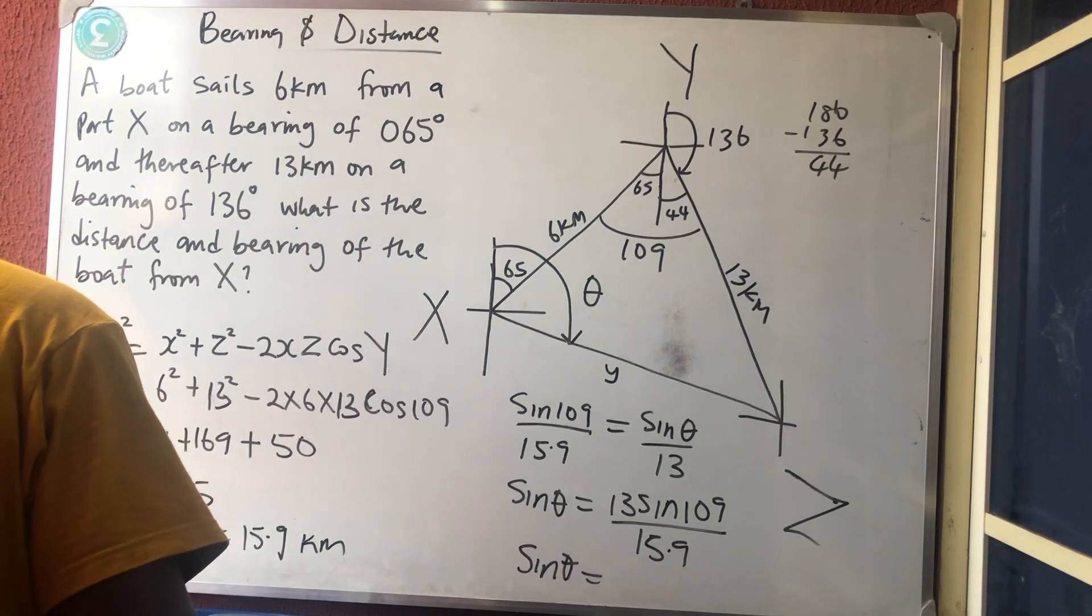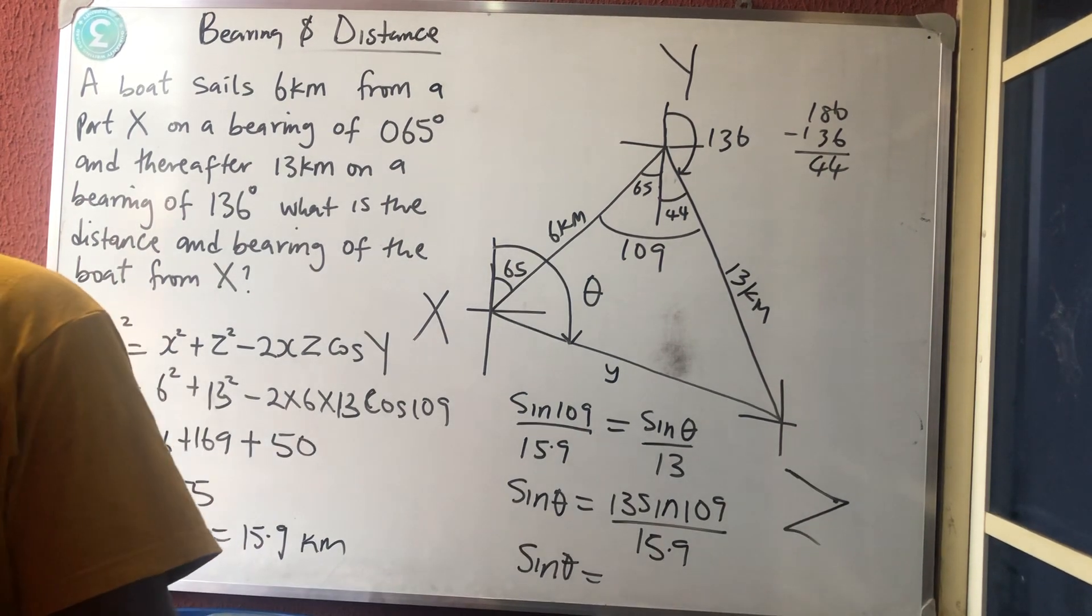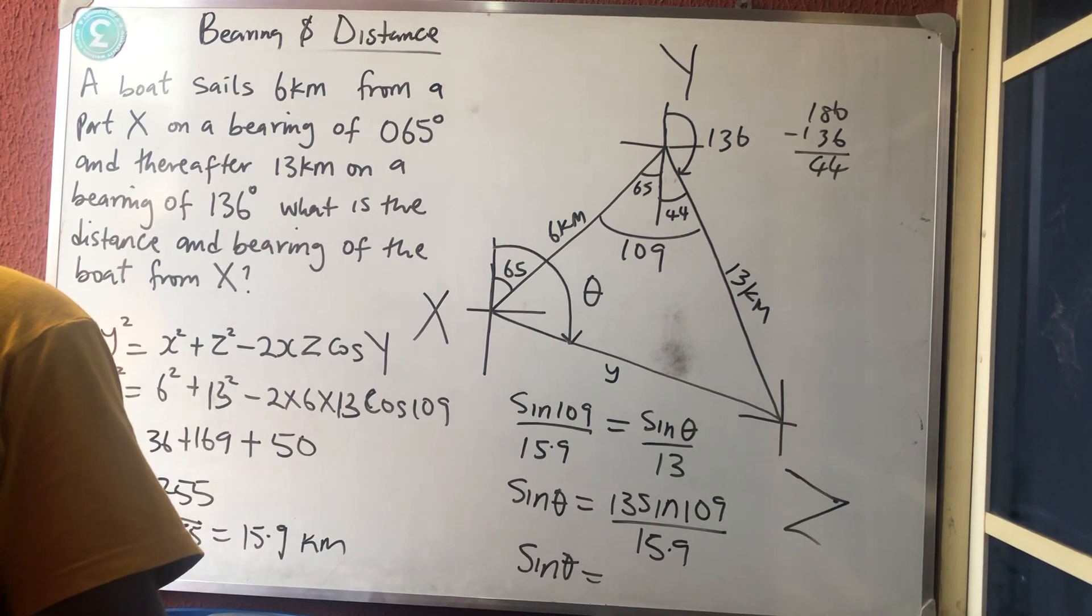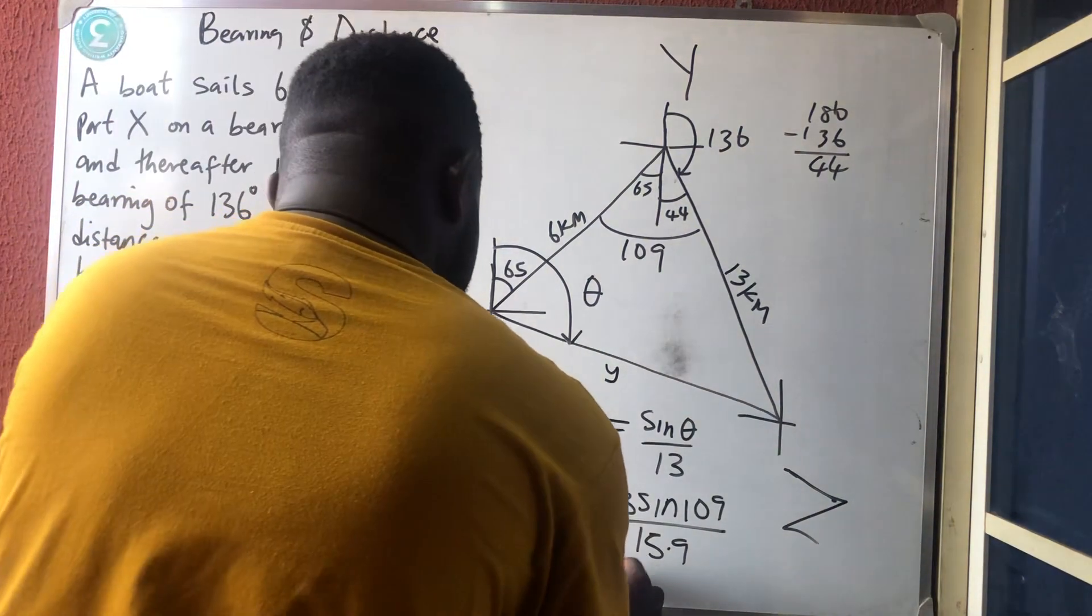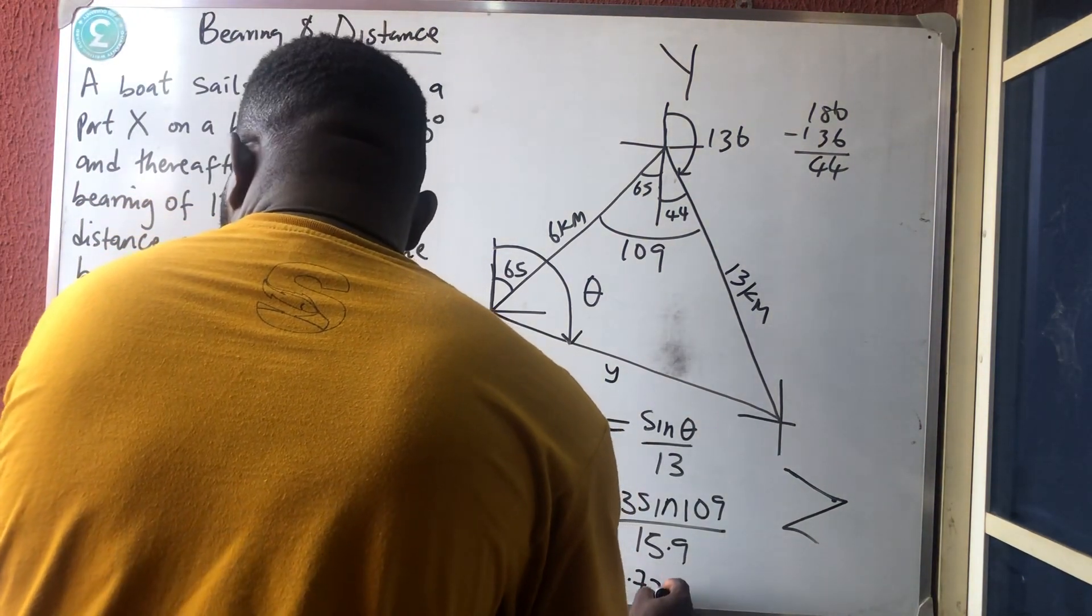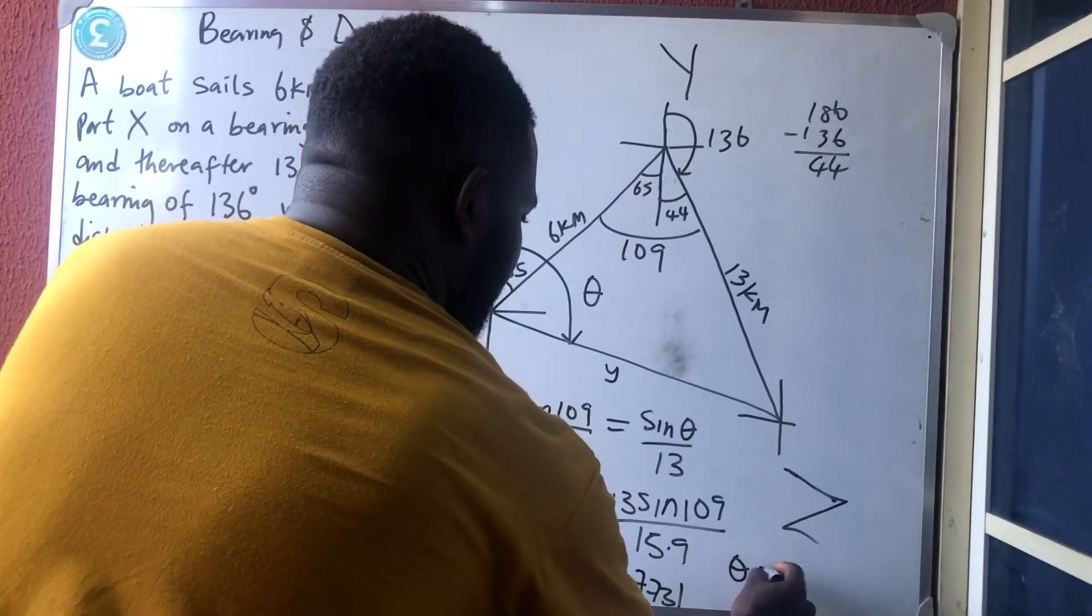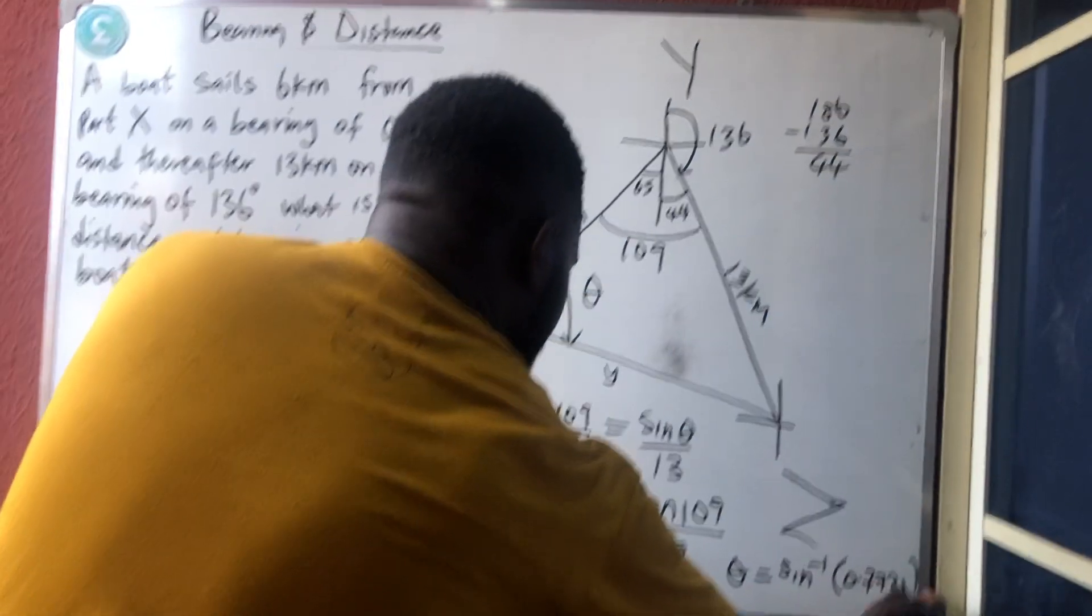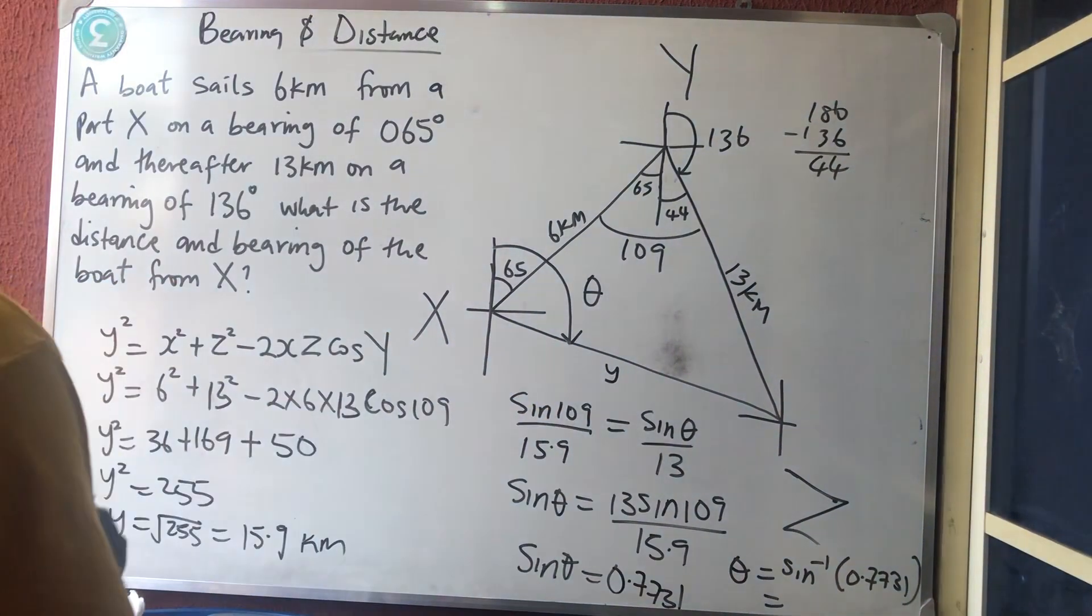Sin 109° times 13 divided by 15.9. So I'm having 0.7731. So therefore my θ will be what? Sin inverse of that 0.7731. So I'm having 50.6°, which is what, 51° to the nearest whole number.